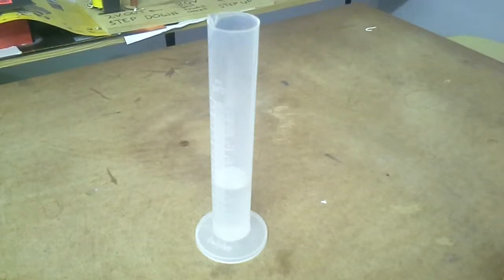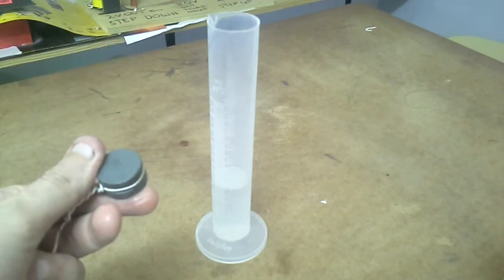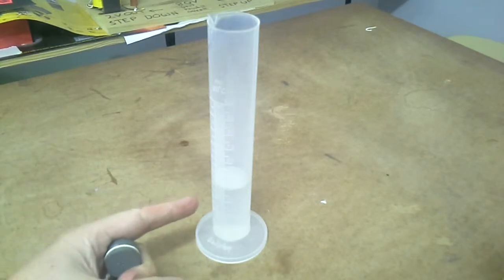I want to demonstrate how you can use a measuring cylinder to find volume. I've got a mass here and I want to find the volume of this mass. What I did was partially fill the measuring cylinder with water.